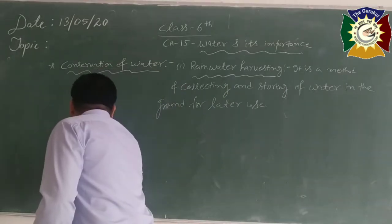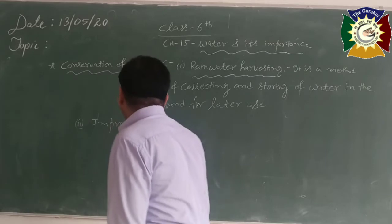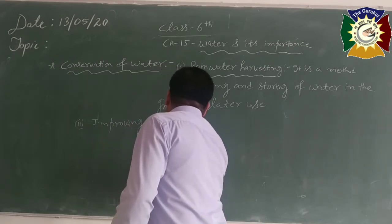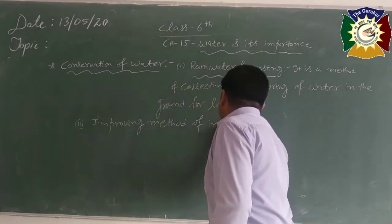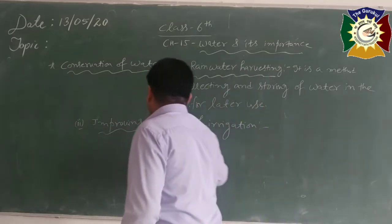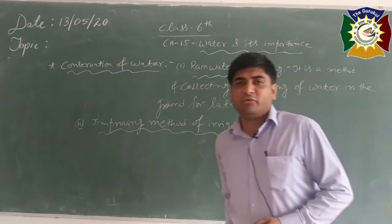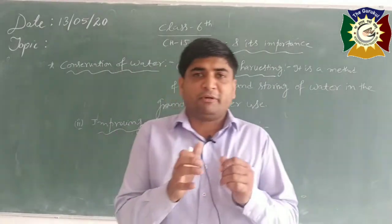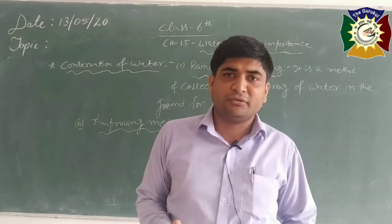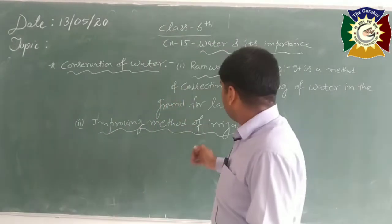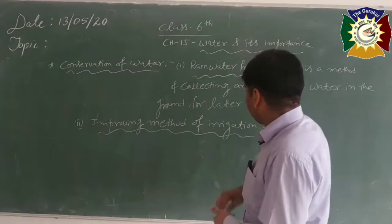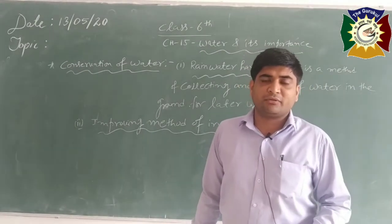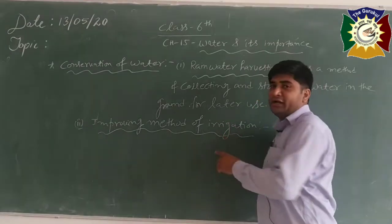The second method is improving the method of irrigation. As we know, a lot of water is used for the purpose of agriculture — in irrigation. There are further types of irrigation which you will study in full detail, including what the types of irrigation are.